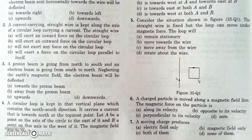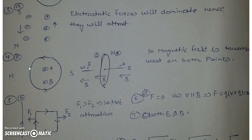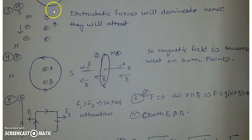Hence the force will be zero. In the next question, there is a proton beam moving from north to south and an electron beam going from south to north. We have to find how the electron beam will be deflected — towards the proton beam, away, upward, or downward. Remember, these are not electrically neutral current — these are proton beams, so they can be treated as current as well.